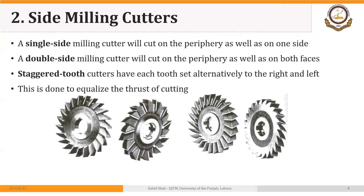Side milling cutters have teeth on the side or face as well, in addition to teeth on the periphery. They have different types: a single side milling cutter will cut on the periphery as well as on one side or face; a double side milling cutter will cut on the periphery as well as on both sides or faces; and a staggered tooth cutter has each tooth set alternatively to the right and left, which is done to equalize the thrust of cutting. The teeth on the side could be only on one side, on both sides, or in alternate fashion.